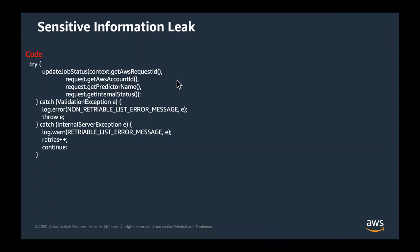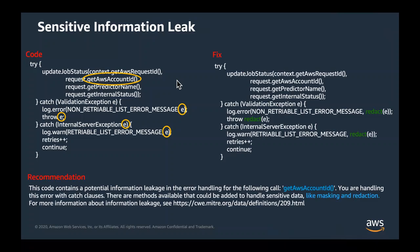An example in a different domain is sensitive information leaks. Here's an AWS API, update job status, which can take a number of parameters and may result in an exception. One of the parameters is the result of get AWS account ID, which may be sensitive and that customers don't want logged when catching an exception. CodeGuru Reviewer can warn you about this so you can follow best practices for redacting potentially sensitive information.